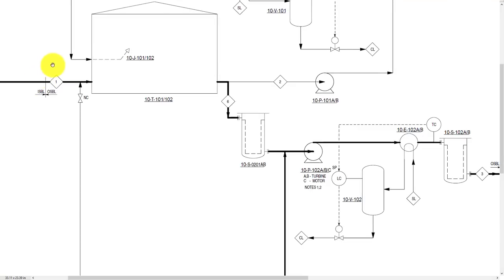You can see the battery limit between OSBL and ISBL. This process stream is numbered as 1, for which detail is given in the table below.